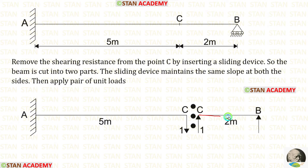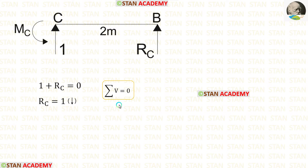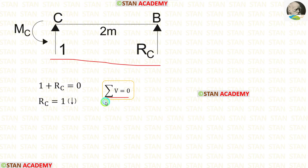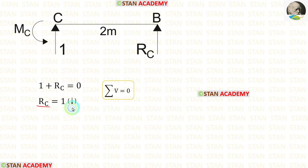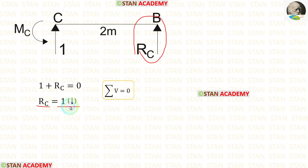Let us take CB and find the reactions. Let us apply the rule sigma V equals 0 in CB. When we do that, we are getting RC. For RC, we got a negative value, which means our assumption is wrong. We assumed that RC is acting upwards, but actually it is acting downwards.